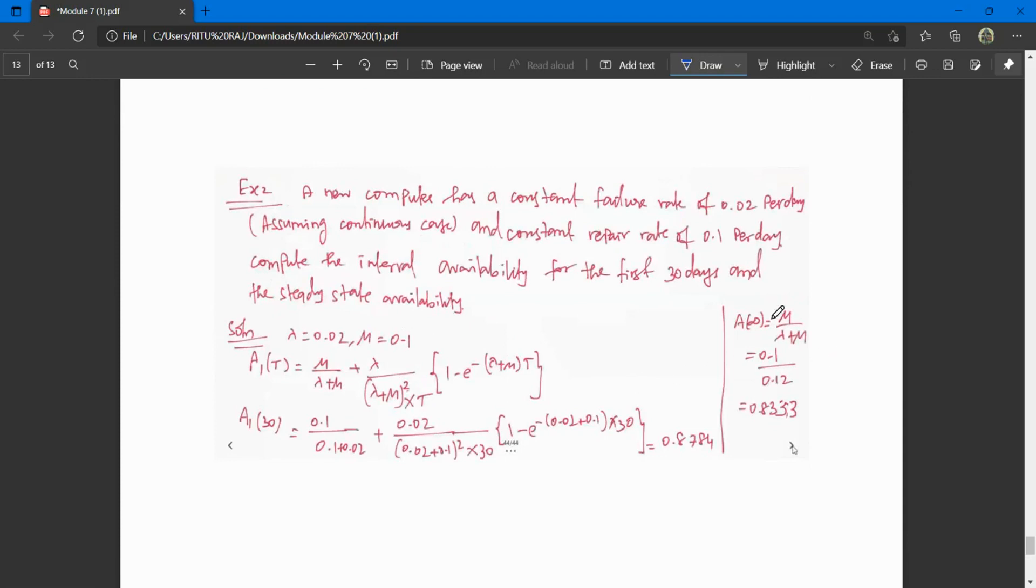This is the last question in this module. A new computer has a constant failure rate of 0.02 per day and constant repair rate of 0.1 per day. Compute the interval availability for the first 30 days and the steady state availability.